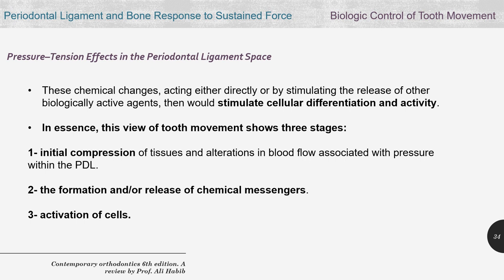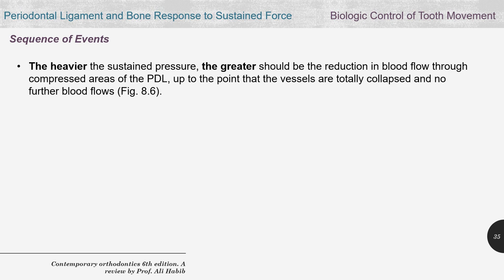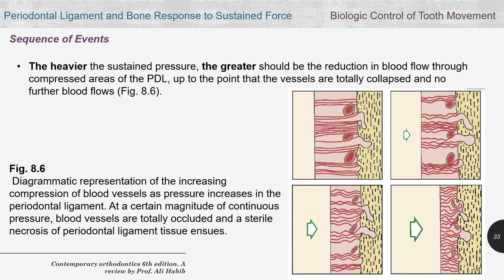These chemical changes, acting either directly or by stimulating the release of other biologically active agents, stimulate cellular differentiation and activity. We can view tooth movement in three stages: first, initial compression of tissues and alteration of blood flow within the PDL; then, formation and release of chemical messengers that activate cells — osteoclasts on the compression side and osteoblasts on the tension side.